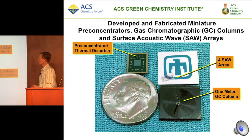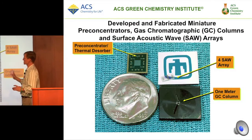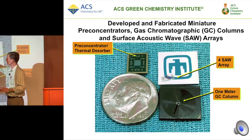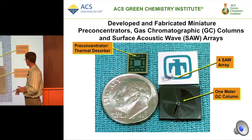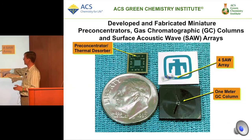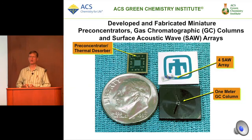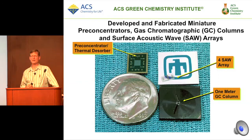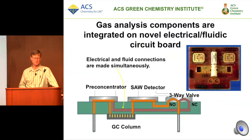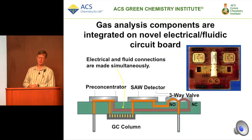Here's a great example of miniaturization: a pre-concentrator thermal desorber smaller than the size of a dime, combined with a one-meter gas chromatography column. This allows us to do real-time analysis in a way that couldn't be done before — analytical instrumentation on a chip.